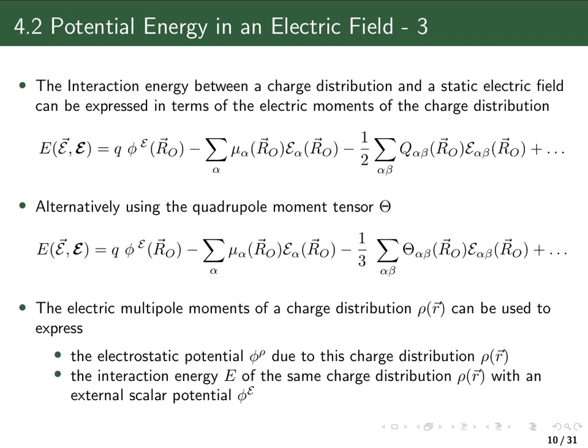Alternatively, we can write the same expansion using the traceless quadrupole moment tensor, which we introduced in the previous lecture, instead of the second electric moment. The prefactor then changes from one-half to one-third, and we have the traceless quadrupole moment tensor contracted with the electric field gradient.